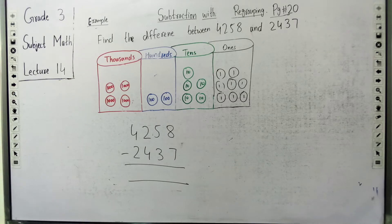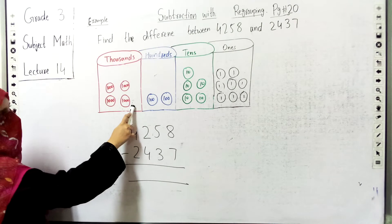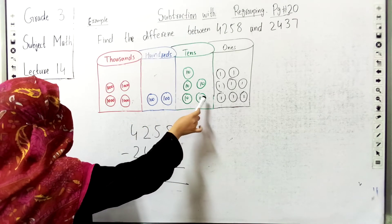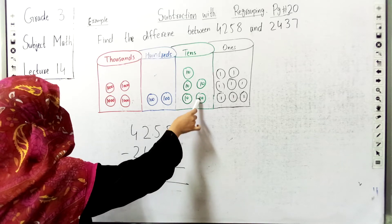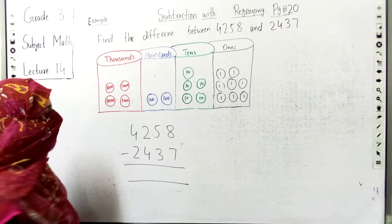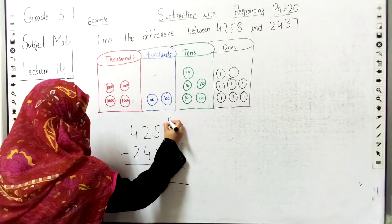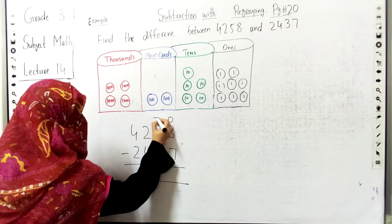We have to find the difference between these two numbers. We have to find the greater number and minus the smaller number. So here we have 4 blocks of 1000, 2 blocks of 100, 5 blocks of 10, and 8 blocks of 1. We have 2437 to minus.